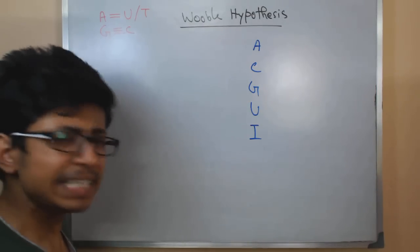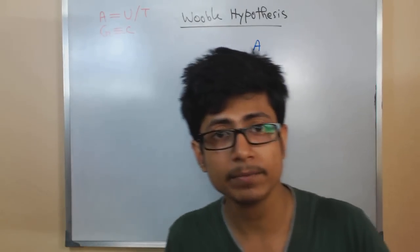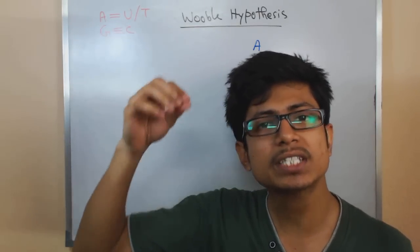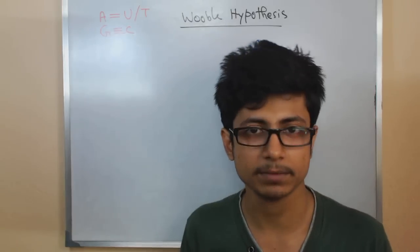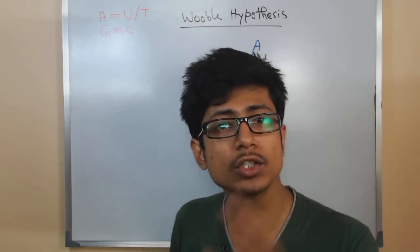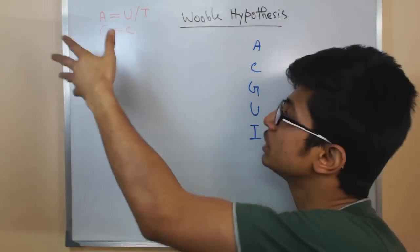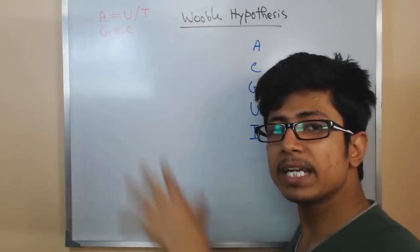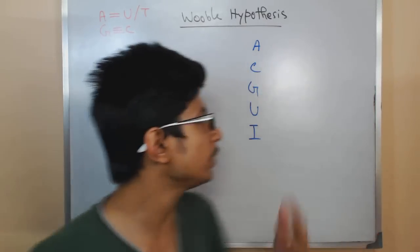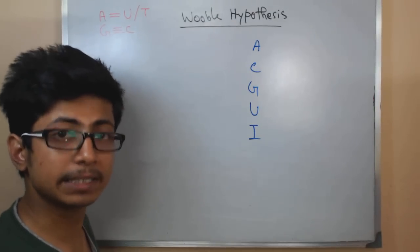Any other type of base pairing in RNA except for Watson-Crick base pairing is termed as wobble base pairing. It does not follow the rule of Watson-Crick pairing — that is A with U or G with C. It is a different type of base pairing process. So why do we need all this?